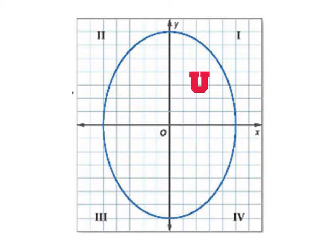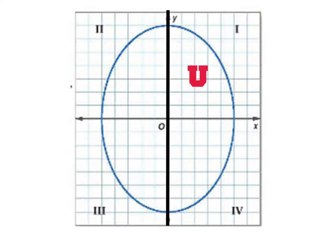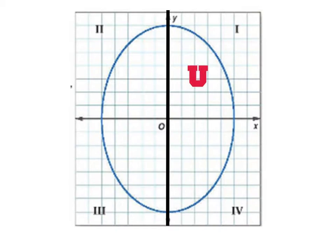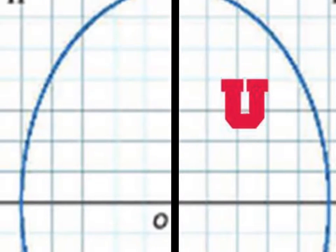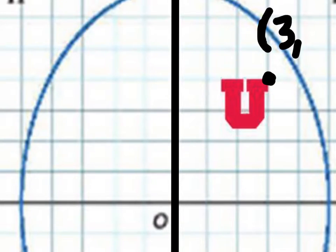So let's look at this U here. First thing we're going to do is we're going to reflect that over the y axis. We want to find a point on this graph that is going to make this really easy — we want a coordinate pair that just has whole numbers. We can see this will reflect on this point here, and it looks like it's 3 and 4.